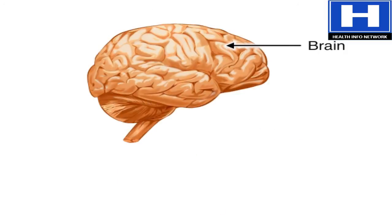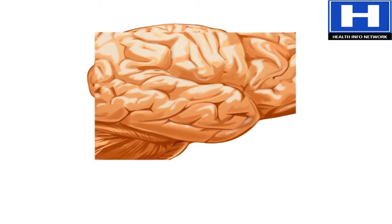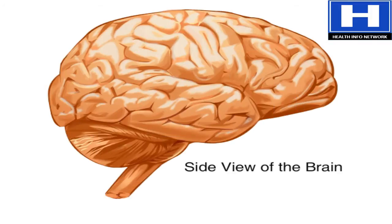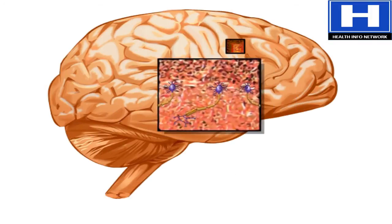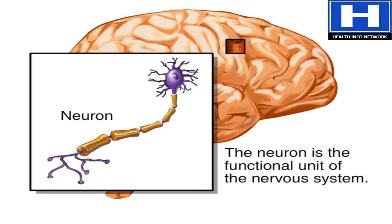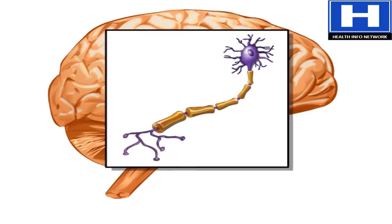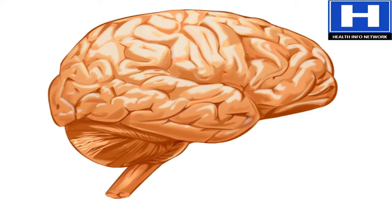The brain is composed of more than a thousand billion neurons. Specific groups of them, working in concert, provide us with the capacity to reason, to experience feelings, and to understand the world. They also give us the capacity to remember numerous pieces of information.